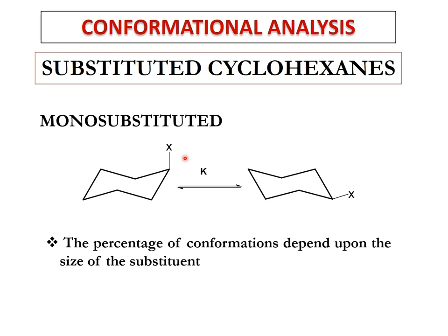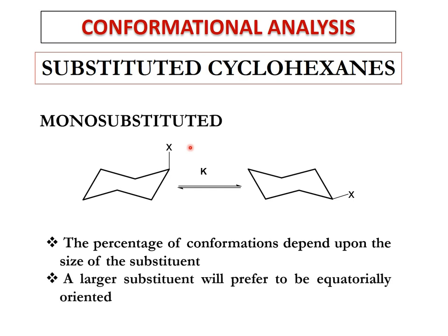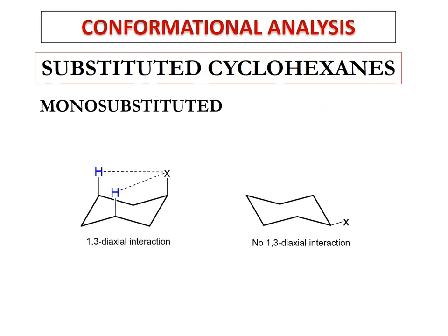What decides which conformation is more favorable is the size of substituent X — a larger X would prefer to be equatorially oriented. If we have a larger substituent, the ring would preferably be in the form in which X is equatorially oriented. The reason is that when X is axially oriented, it comes closer to the two hydrogens present at position three relative to this carbon atom, coming within the van der Waals radius.